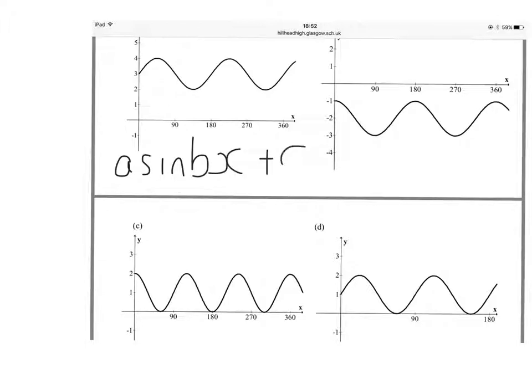So the plus C indicates a vertical shift. We'll find the amplitude and B, the number of cycles in 360, as normal. But then we need to think about calculating C, which is the vertical shift.